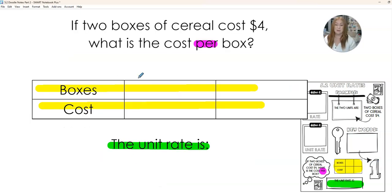Let's try out an example here. We're going to use those same tables we used before. We're using the same table and we're going to set it up here. If two boxes of cereal cost $4, what is the cost per box? Now I know a lot of you can do this in your mind, but we're practicing setting this up so when we get to harder problems, we understand the setup.